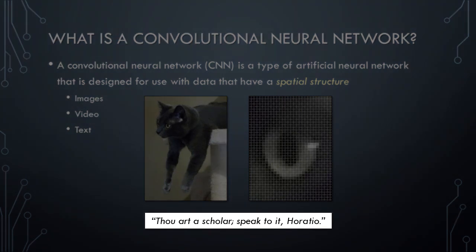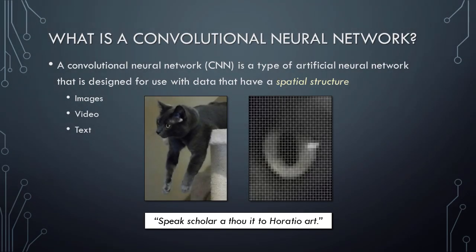The same concept applies to text. Consider this quote from Hamlet: 'Thou art a scholar, speak to it, Horatio.' Marcellus is addressing Horatio and suggesting that since Horatio is a scholar, he should be the one to speak to the ghost of Hamlet's father. Again, the order or location of each word in the sentence has value. If we were to randomly reorder all of the words, we could no longer understand the meaning Shakespeare was attempting to convey. Unlike traditional artificial neural networks, convolutional neural networks are intentionally designed to capture the spatial relationships among all individual input values.